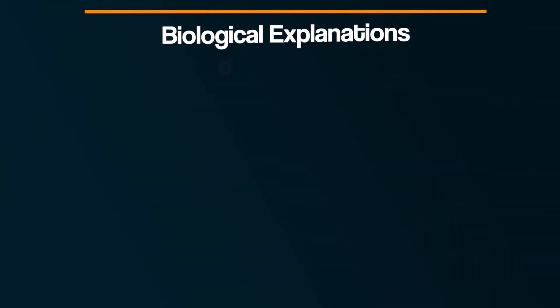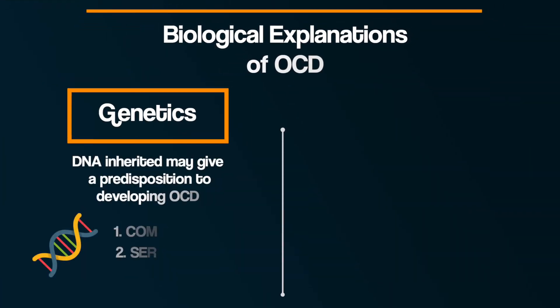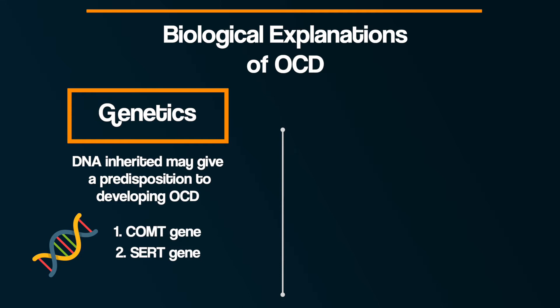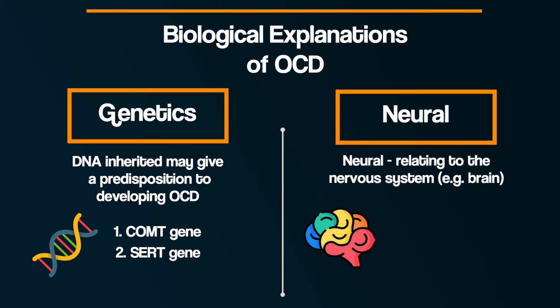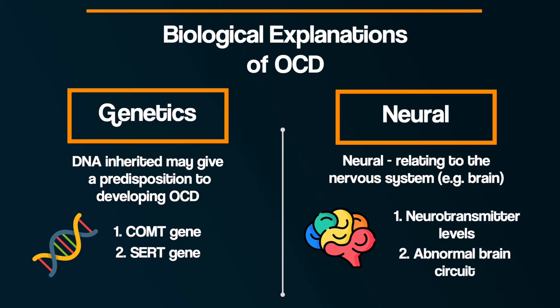So, the first biological explanation of OCD was genetics. In this second explanation, we're going to explore the neural explanation. The word neural relates to the nervous system, and we're going to consider this in two parts: firstly, neurotransmitter levels, and secondly, an abnormal brain circuit.